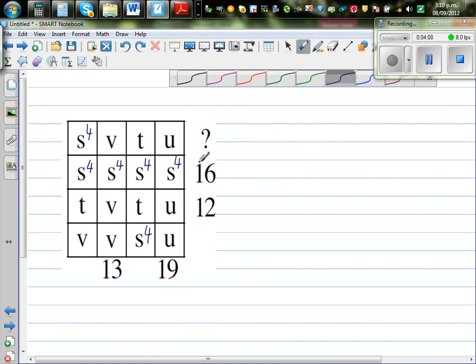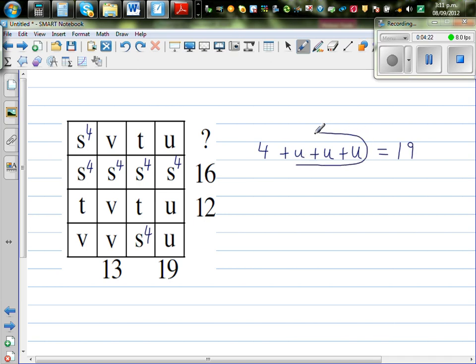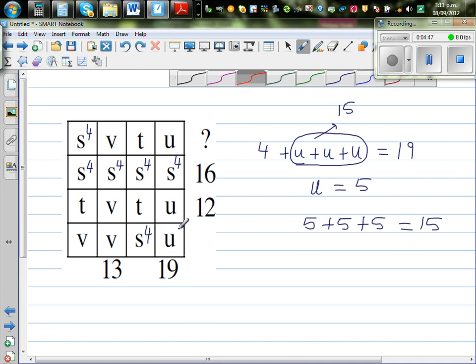Let us look at vertically. So this is 4 plus u plus u plus u is 19. So think about logically. So this has to be 4 plus what is 19. So 4 plus 15 is 19. So u is equal to 5, because I know 5 plus 5 plus 5 is 15. So my u, let me use a different color for u. So this is u is 5. So I'm going to write 5 in place of u.